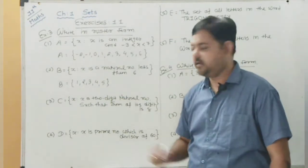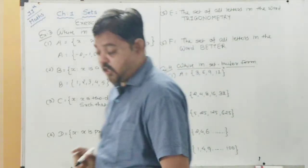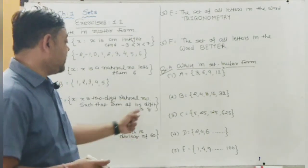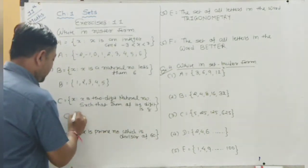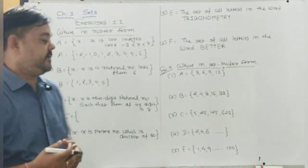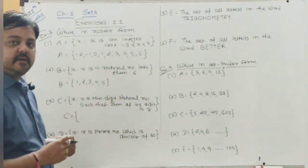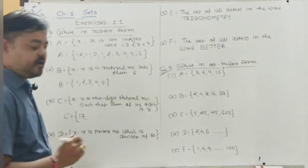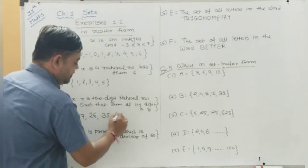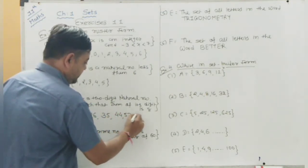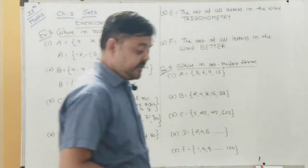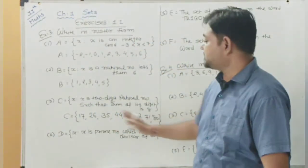Set C = {x : x is a two-digit natural number such that the sum of its digits is 8}. Two-digit numbers start from 10. The sum of unit and tens place digits must equal 8. So: 17, 26, 35, 44, 53, 62, 71, and 80. These are all two-digit numbers where the sum of digits is 8.